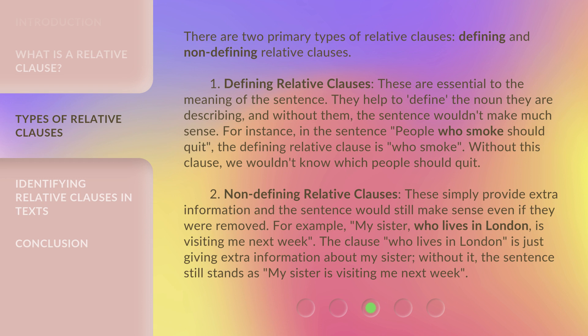Non-defining relative clauses simply provide extra information, and the sentence would still make sense even if they were removed. For example, 'My sister, who lives in London, is visiting me next week.' The clause 'who lives in London' is just giving extra information about my sister. Without it, the sentence still stands as 'My sister is visiting me next week.'